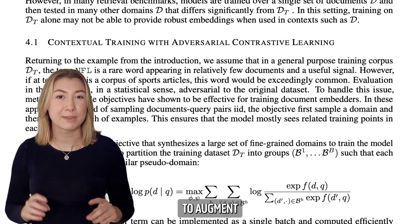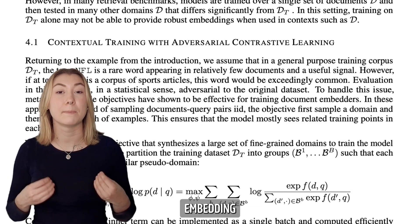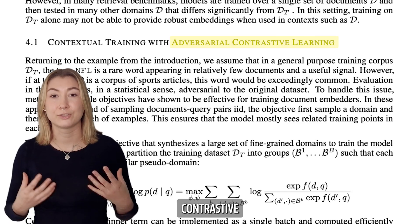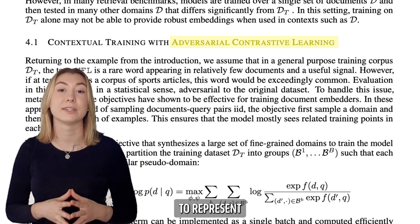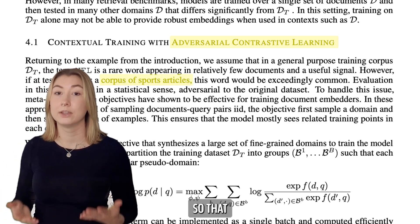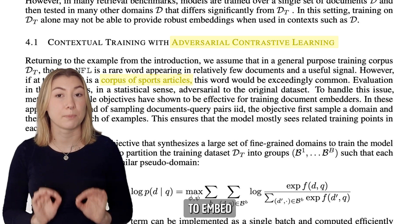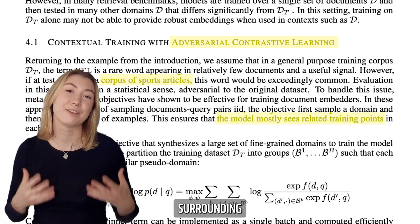Their first proposal is to augment the training objective of typical embedding models by adversarial contrastive learning. Using a pre-trained embedding model, they cluster documents to represent different contextual domains, so that during training, the model learns to embed whilst accounting for similar surrounding context.